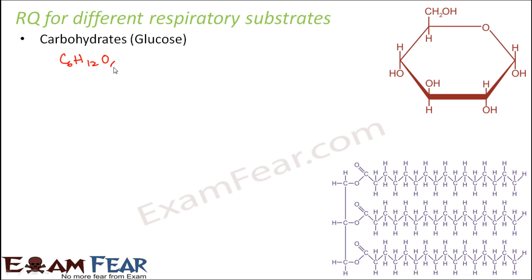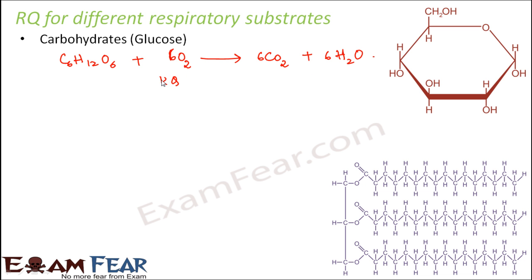Glucose is C₆H₁₂O₆. When glucose is oxidized, carbon dioxide and water are formed. This is how the equation looks for complete oxidation of glucose. The respiratory quotient here is the number of CO₂ molecules, which is 6, divided by the number of O₂ molecules taken in, which is also 6. So the respiratory quotient for glucose is 1.